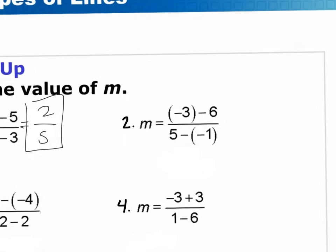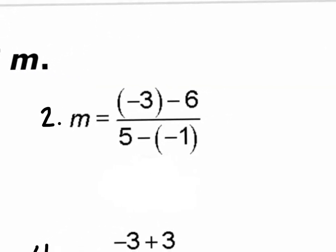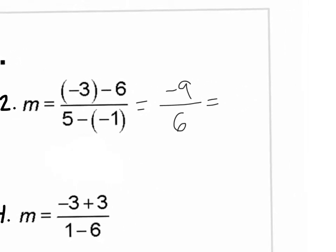Let's look at number 2. What's negative 3 minus 6? Negative 9 over what's 5 minus negative 1? Positive 6. Can we simplify negative 9 over 6 to what? Negative 3 over 2.